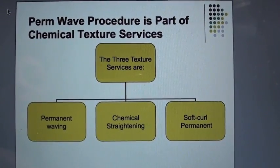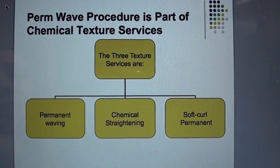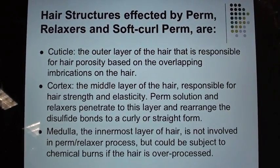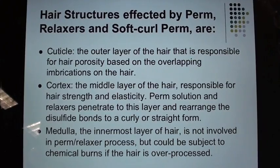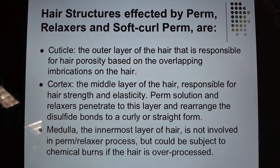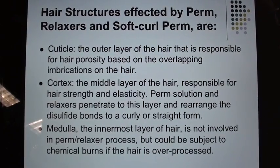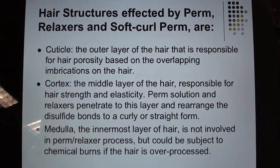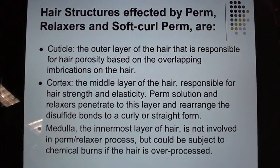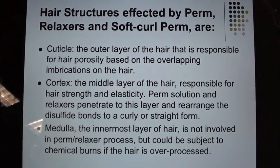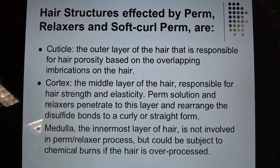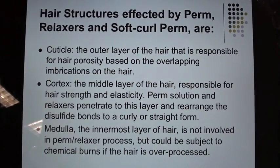The three texture services are permanent waving, chemical straightening, and soft curl permanent. Hair structures affected by perm, relaxers, and soft curl perm are: Cuticle — the outer layer of the hair responsible for hair porosity based on the overlapping imbrications on the hair. Cortex — the middle layer responsible for hair strength and elasticity; perm solution and relaxers penetrate to this layer and rearrange the disulfide bonds to a curly or straight form. Medulla — the innermost layer, not involved in the perm/relaxer process but could be subject to chemical burns if the hair is over-processed.